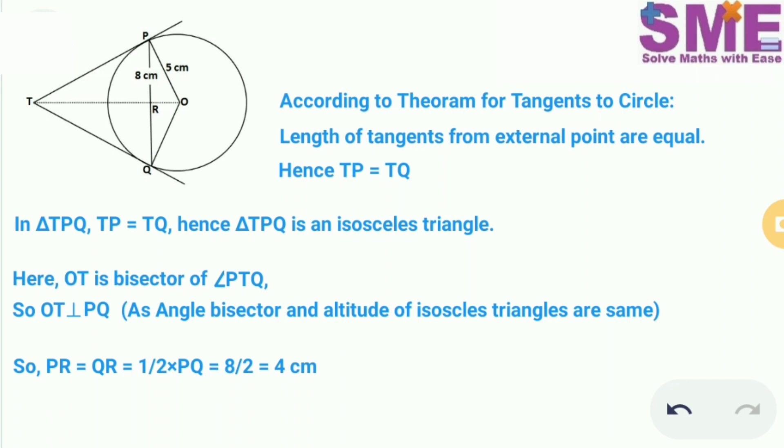So we have PR is equal to QR which is equal to half of PQ. So this equals 8 by 2. So we get PR is equal to QR is equal to 4 cm.